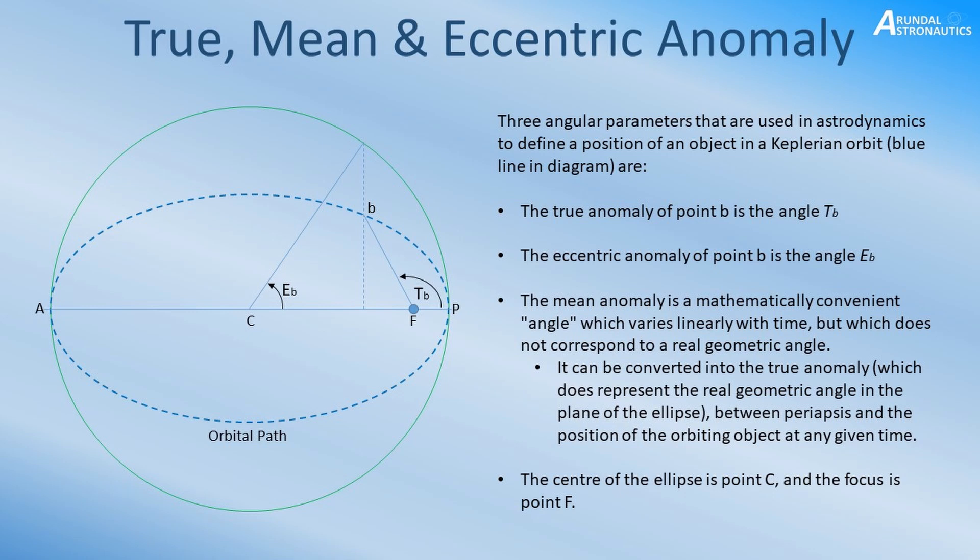For the last slide before we start looking at the calculations, I wanted to show what the true, mean, and eccentric anomalies are as I mentioned them in the previous slide. Again, I invite you to pause the video at this point to read through this slide and absorb the diagram. If you're interested in more orbital mechanics and details beyond this video, I can strongly recommend Orbital Mechanics for Engineering Students by Howard D Curtis, and there's a link in the description below.